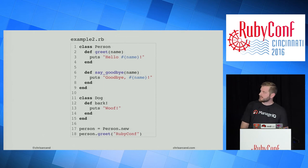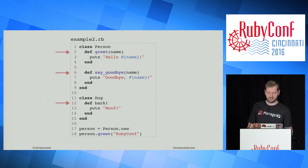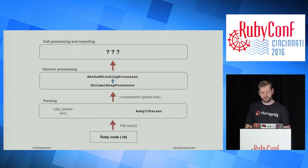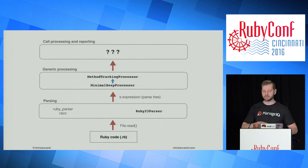Expanding the example: we have Person with 'greet' and 'say_goodbye,' a class Dog with a 'bark' method, and we only call 'greet.' Running it and pretty-printing 'method_locations,' we find Person#greet on line 2, say_goodbye on line 6, and bark on line 12. We now know where methods are defined. The generic processors we've built to process the S-expression tree and record method locations provide the footing for our tool. The only thing left is to process call nodes, see what's being called, and line them up with what callees we're tracking — which brings us to part three: building the dead method finder.